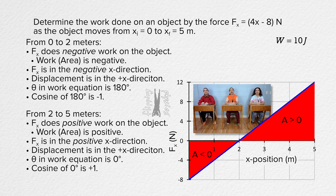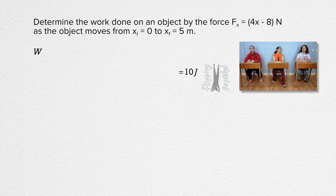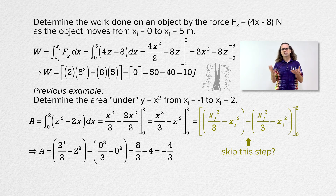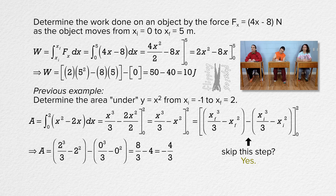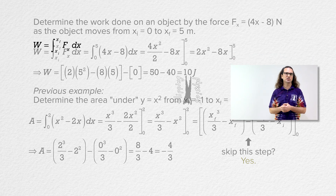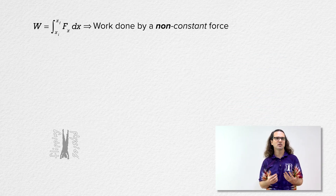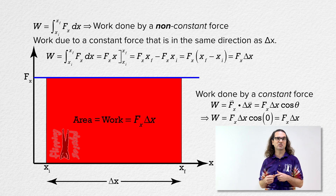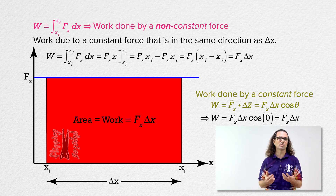Bobby showed less work during that last example than we did during the rest of the examples — he skipped the step where you show the final and initial position equations before substituting in those limits. Can we really skip that step? Yes. We were being exceptionally careful while learning these integrals, but now that we know how to do them, that one specific step can be omitted. I keep referring to this integral work equation as the equation for the work done by a non-constant force. The reality is that you can also use this equation to find the work due to a constant force in the same direction as the displacement. The integral just works out to give you the area of the rectangle with sides of force in the x-direction and displacement. Typically, however, it is easier to think of the dot product work equation as the one to use with constant forces and the integral work equation as the one to use with non-constant forces.